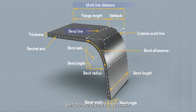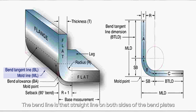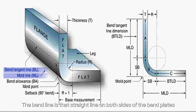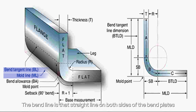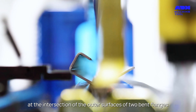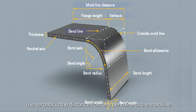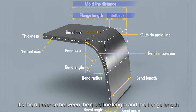Before we dive into setback, let's get acquainted with the mold line and bend line. The bend line is that straight line on both sides of the bend plates, while the mold line is formed at the intersection of the outer surfaces of two bent flanges. The setback is the distance from any bend line to the mold line. In simpler terms, it's the difference between the mold line length and the flange length.